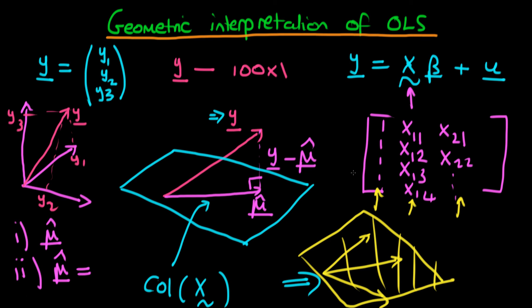The second stage is decomposing mu hat into its various components — some component of the first dimension, some of the second, and some of the third dimension of the independent variables. So we can represent mu hat as being equal to x times beta hat. Don't worry if you don't understand everything in this video; we're going to talk through a few examples in the next videos. I wanted to provide this as an introduction to the geometric interpretation of least squares and the fact that we can think about least squares geometrically.